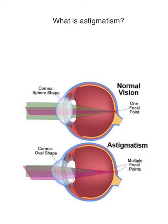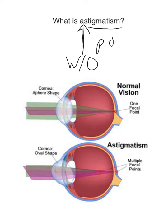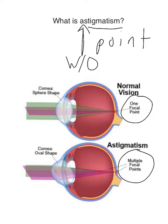This video is about what is astigmatism. The 'a' in astigmatism in Latin means 'without,' and 'stigmatism' in Latin means 'point.' So astigmatism means 'without a point.' In a normal eye, light gets refracted into one single focal point. In astigmatism, the light gets refracted into multiple focal points — hence the name astigmatism, without a point.